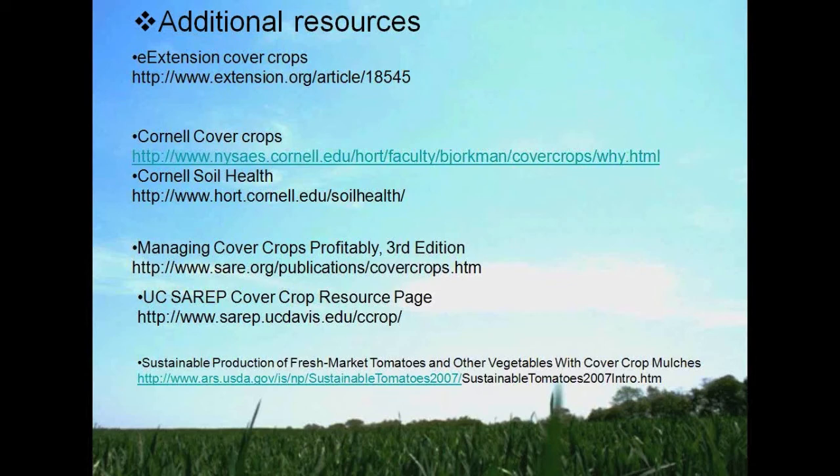Next question: I have a rye grain and hairy vetch cover crop and broadcast P and K while it was one inch high. If I crop roll it at four to five feet high, will it need in-row nitrogen for tomatoes and squash?